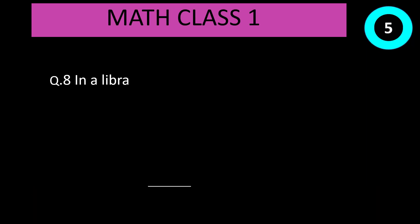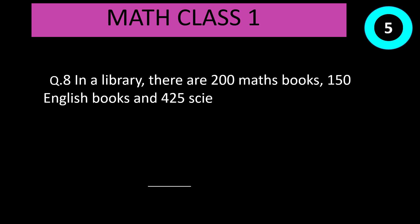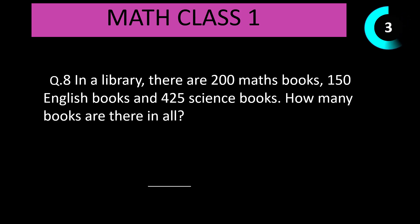Question number 8: In a library, there are 200 maths books, 150 English books, and 425 science books. How many books are there in all? Time start now. Correct answer is 200 plus 150 plus 455 equal to 805.